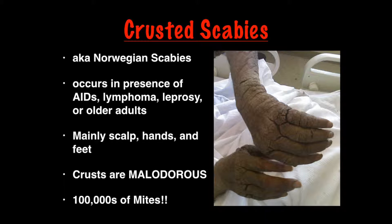Crusted scabies is also known as Norwegian scabies. This occurs in conditions that compromise cellular immunity, like AIDS, lymphoma, leprosy, or even occasionally in older adults. Mainly the scalp, hands, and feet will be infected; however, any area may be affected. The crust and lesions are malodorous, meaning they have a distinct odor.